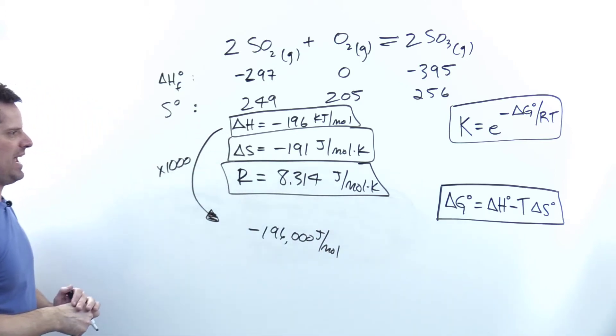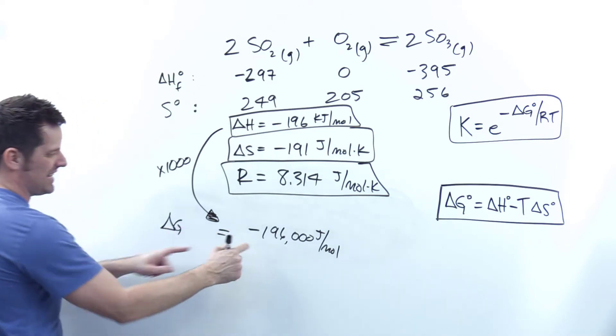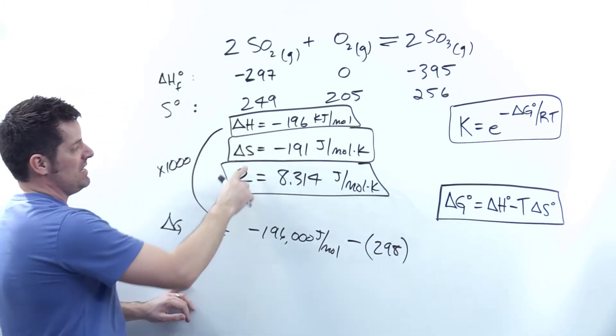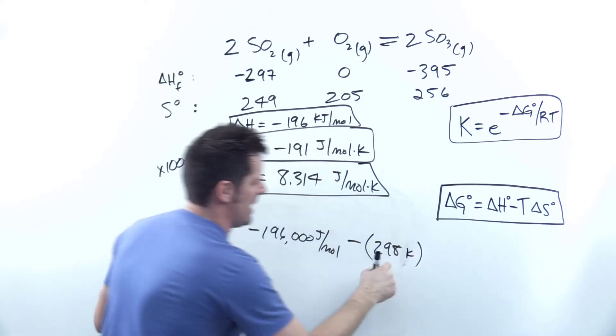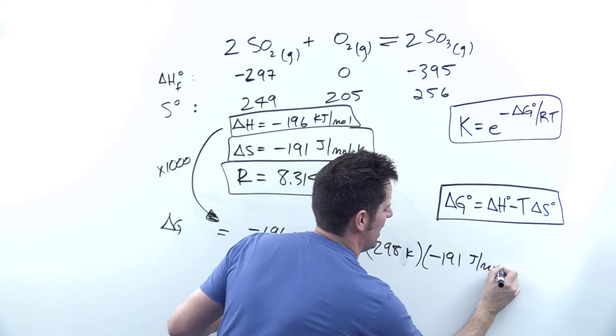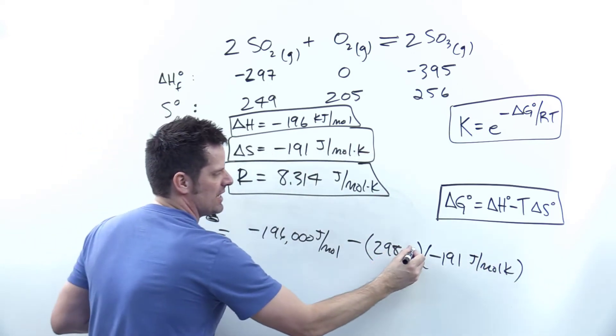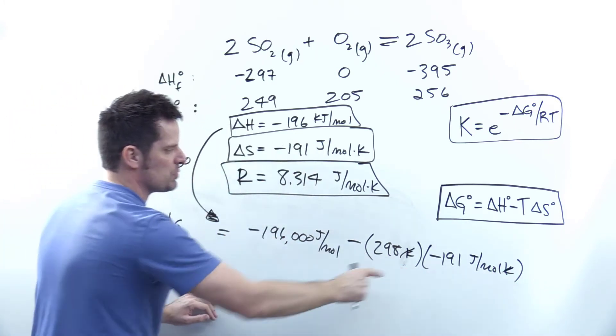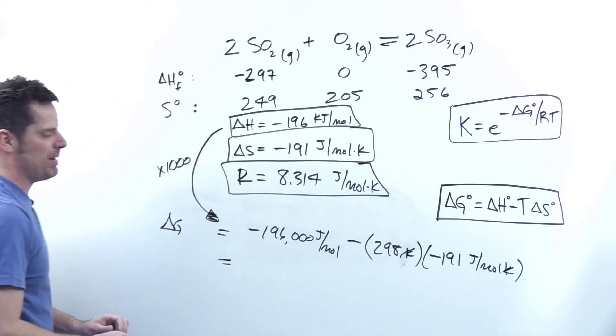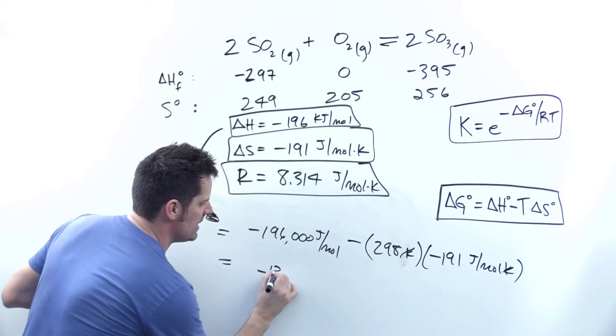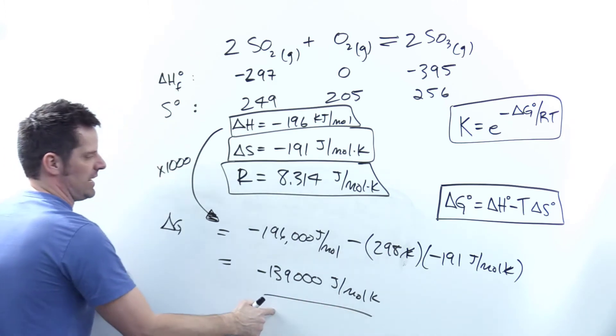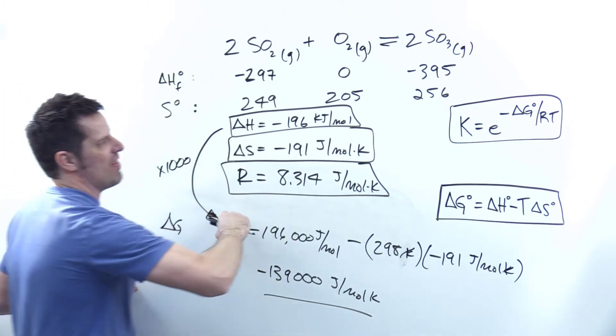Delta G is equal to delta H minus the temperature (298 Kelvin) multiplied by delta S. Delta S is negative 191 joules per mole Kelvin. The Kelvins cancel out, leaving joules per mole as the overall units. You end up getting negative 139,000 joules per mole as delta G.